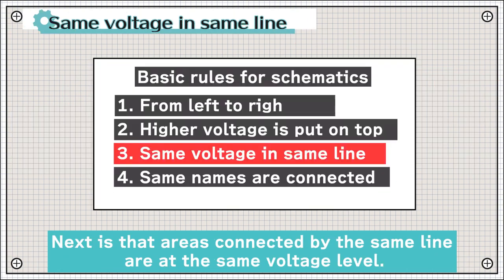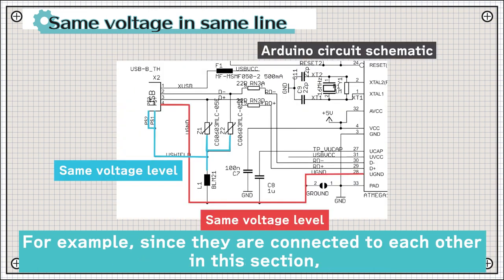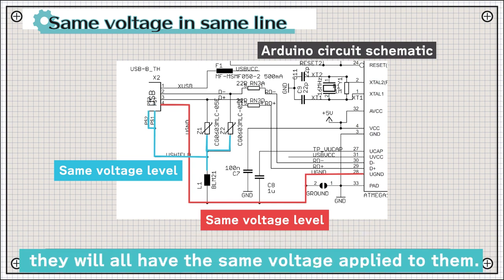Next is that areas connected by the same line are at the same voltage level. For example, since they are connected to each other in this section, they will all have the same voltage applied to them.